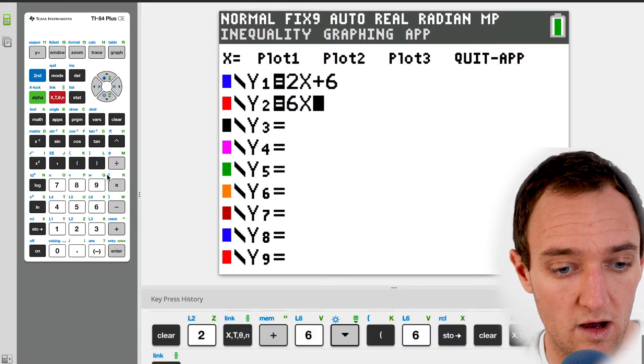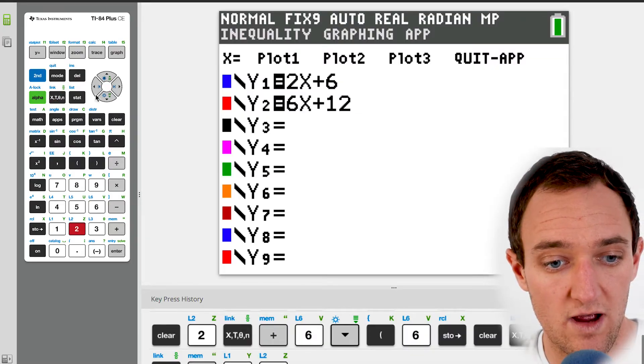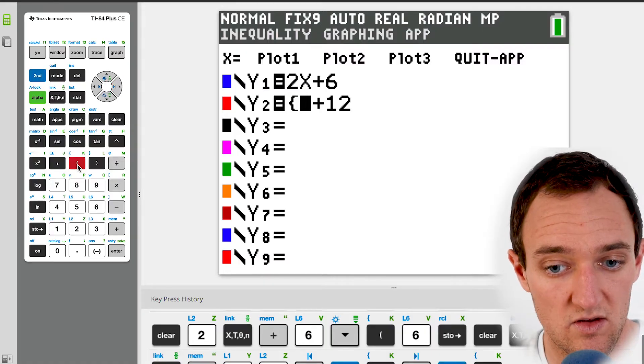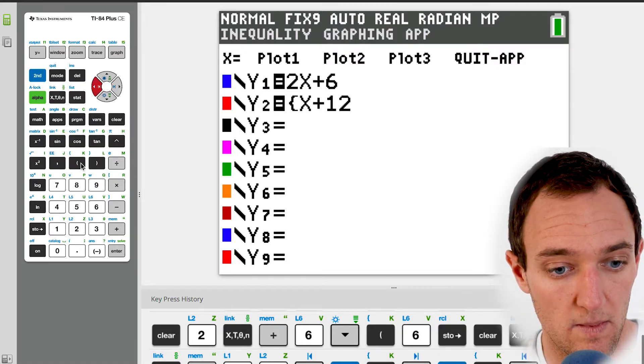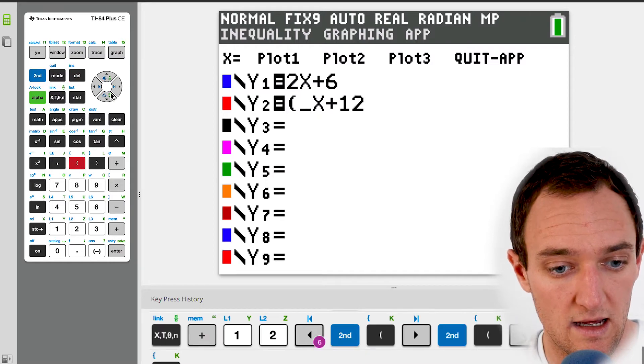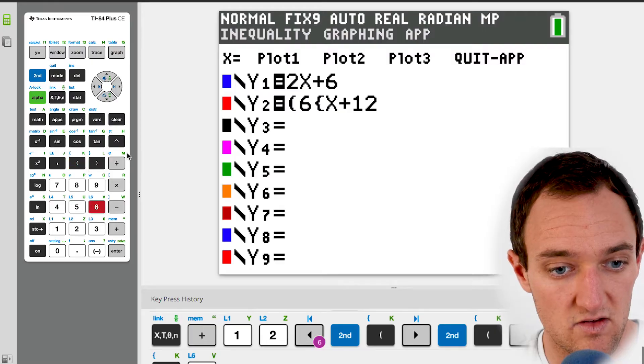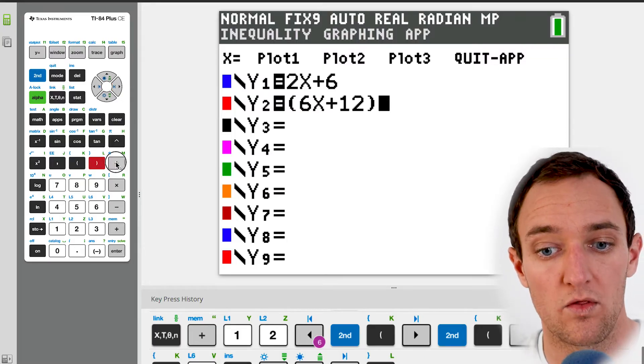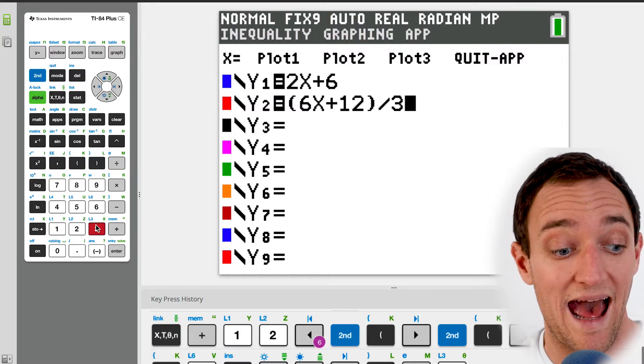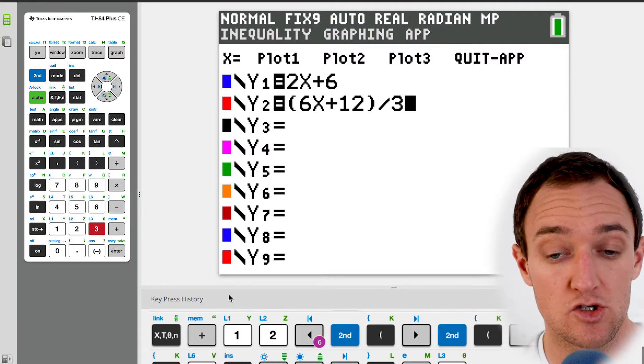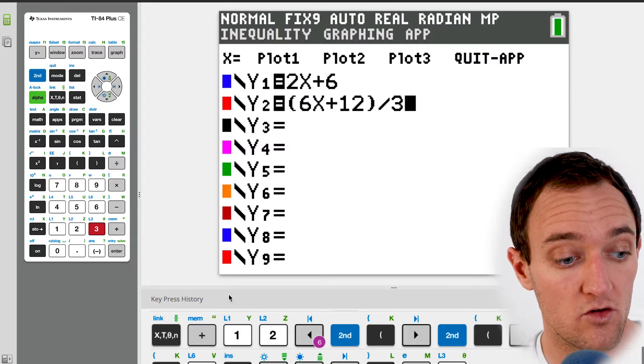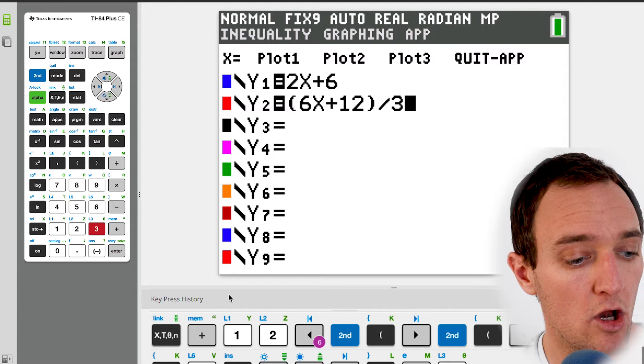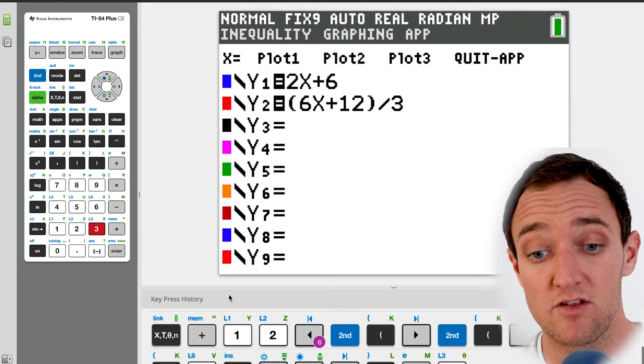So that becomes 6X plus 12. And remember, if it's a fraction here, we want to go ahead and put the whole top part here into parentheses. We're dividing the whole thing by three because we want to have that Y by itself. So now we have here just two ways that we wrote these equations - Y equals 2X plus 6 and Y equals 6X plus 12 divided by 3. And we want to know if a solution exists.